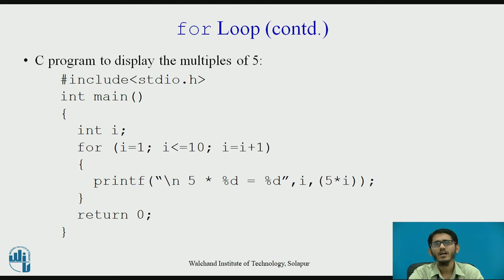Now, let us see a sample program using the for loop to display the multiples of the number 5. In a C program, we first have the first line displaying the inclusion of header files, hash include stdio.h. This is standard input output header file.